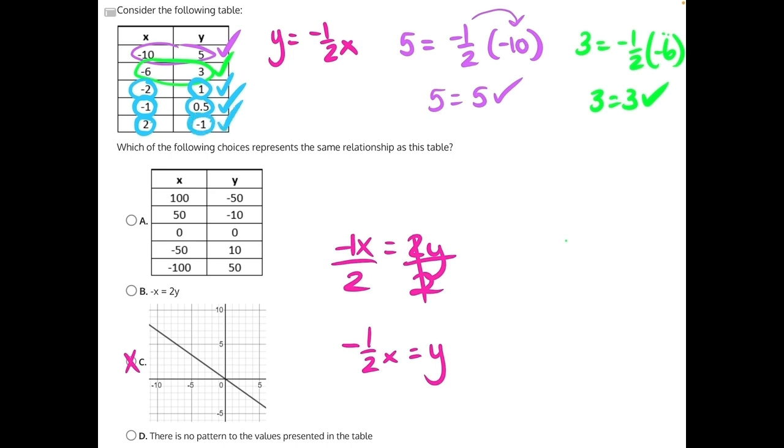So answer choice B matches all of the values in our original function, making it our correct answer. At that point, you can mark B and move on with the rest of the test. But for the sake of the video, I will show you why A and D are incorrect.